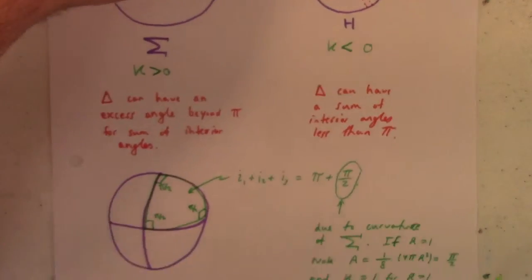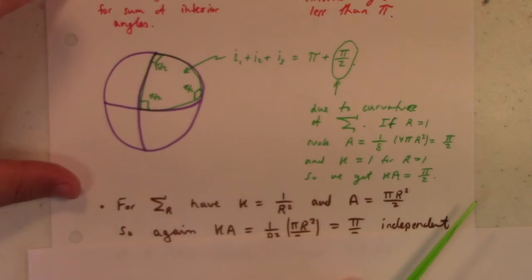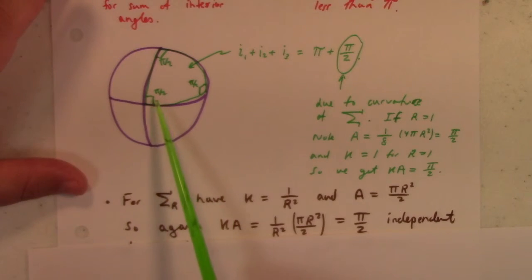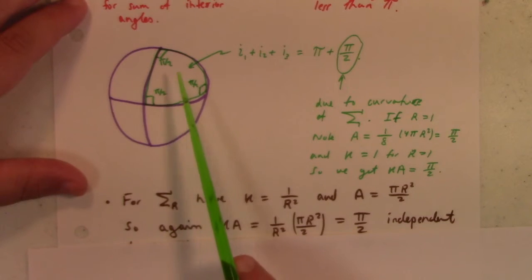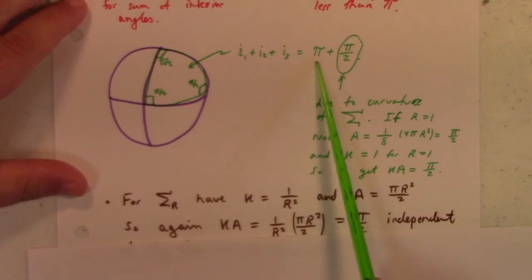For that great triangle formed by one-eighth of the sphere, the area for this bit is one-eighth of the total area. The total surface area is 4πr², so one-eighth of 4πr² with r equal to one is π/2. So k times π/2 is π/2.